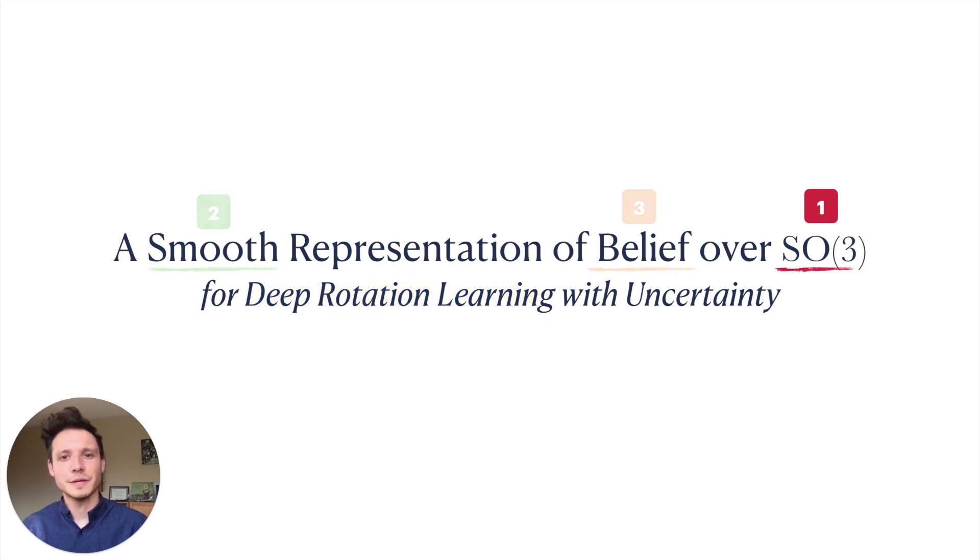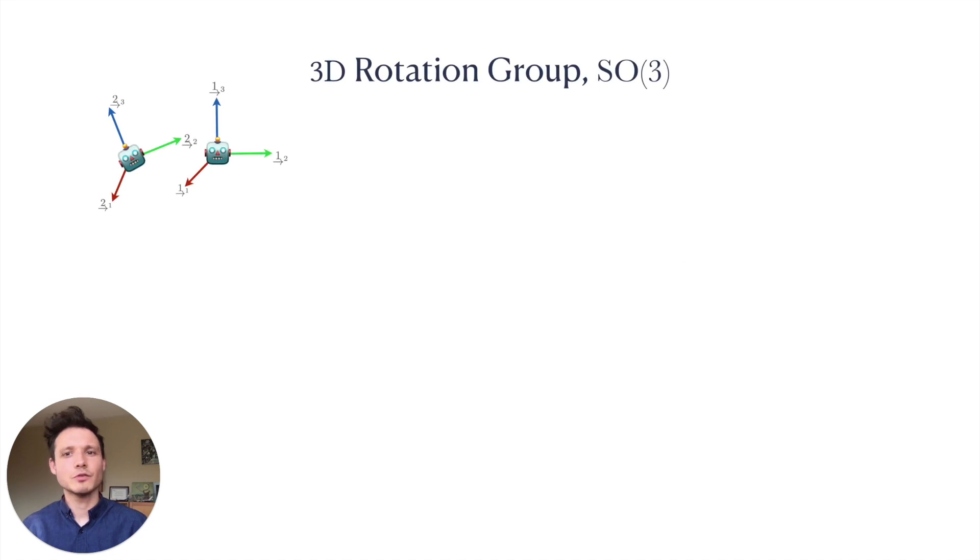Let's begin with SO3. Estimating the rotation of a rigid body is a fundamental part of many applications in robotics and aerospace engineering. Rotations in three dimensions can be formalized by the special orthogonal Lie group SO3, whose elements are 3x3 matrices.